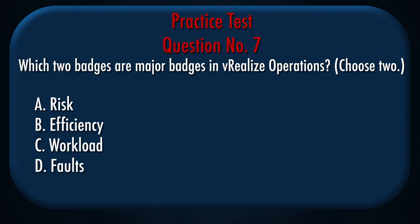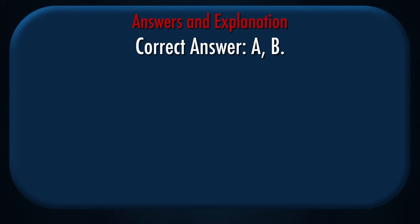Question number 7. Which two badges are major badges in vRealize Operations? Choose two. A. Risk. B. Efficiency. C. Workload. D. Faults. Correct answer: A, B.